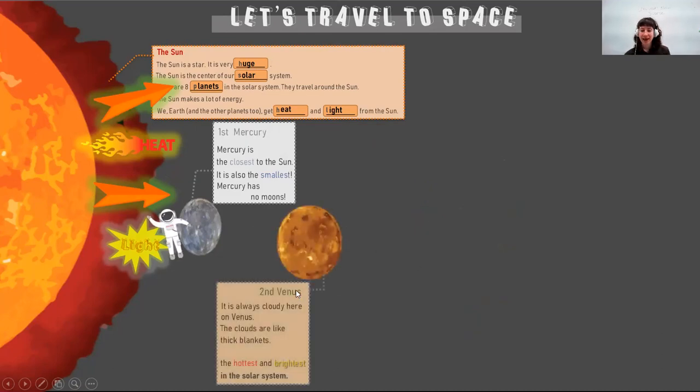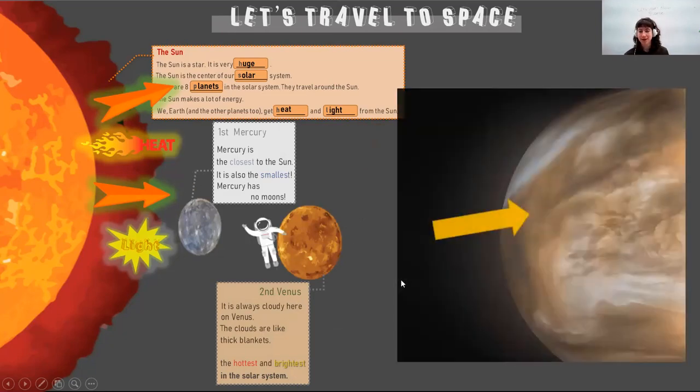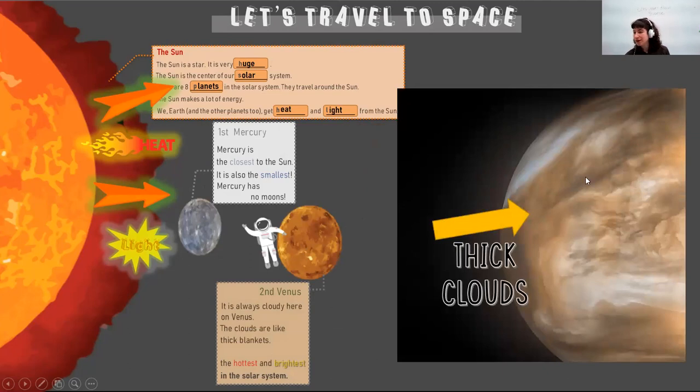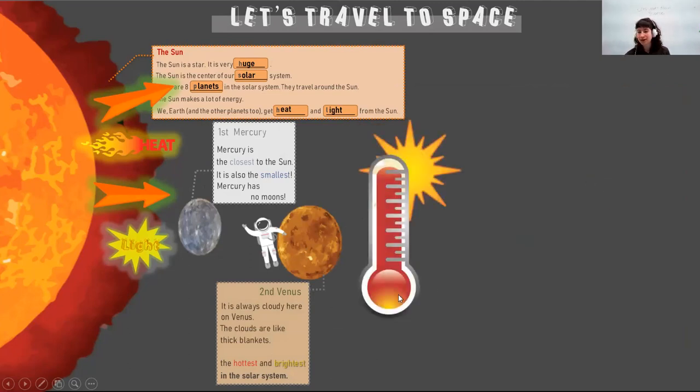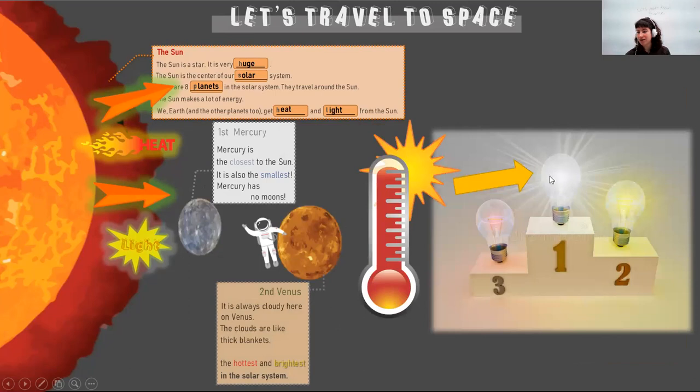Venus. It's always cloudy on Venus and the clouds are very thick. It is the hottest and the most bright in the solar system. So here are the thick clouds, and it's so hot and so bright.